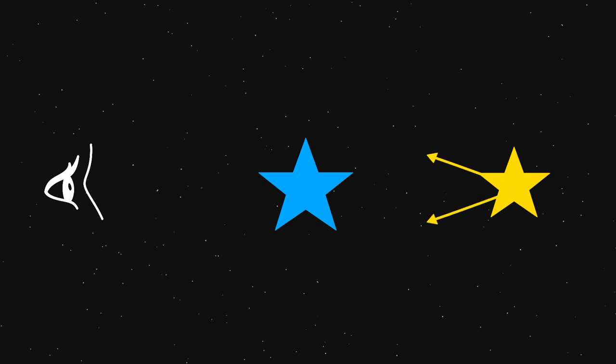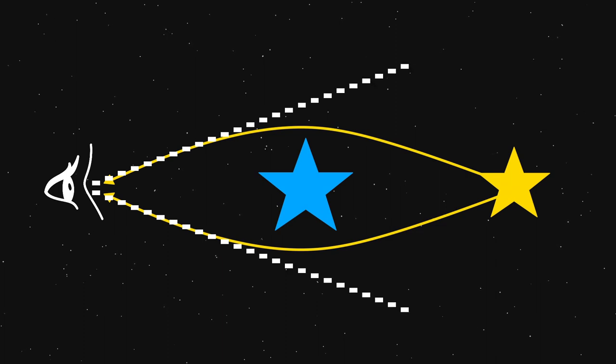According to Einstein's theory, the mass of a star will bend space and light passing nearby will follow a curved path. We see this in this example.